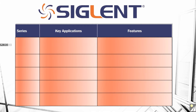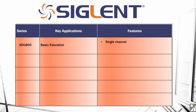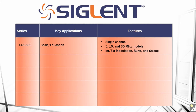The SDG800 series is our basic education application instrument. It is a single channel unit, so it only has one output capable of arbitrary waveform outputs as well as any of the standard basic functions. That's available in 5, 10, and 30 MHz models. It also has internal and external modulation, burst, and sweep. It's a very basic generator, very similar in form factor to the SDG2000X shown earlier, just single channel and lower frequency.